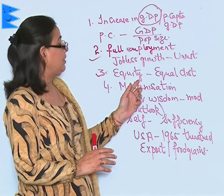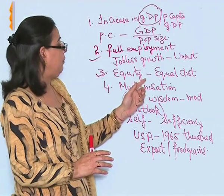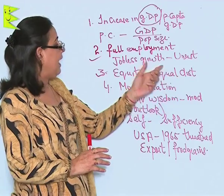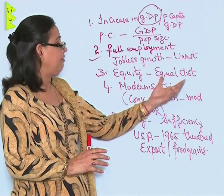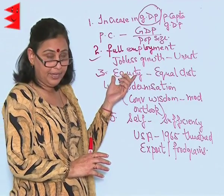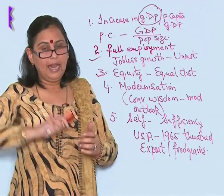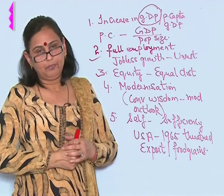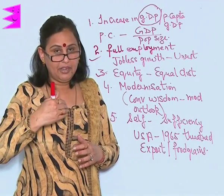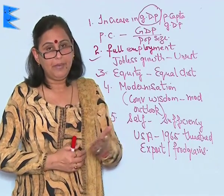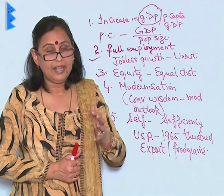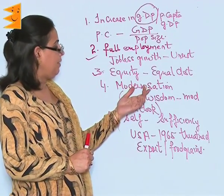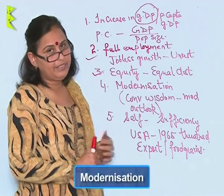There is a difference between equity and equal distribution. Equal distribution, of course, gives rise to equity, but it cannot happen that all of us have an equal share. We are going to have our share divided on the basis of our skills, expertise, and knowledge. The fourth important long-term goal is modernization.